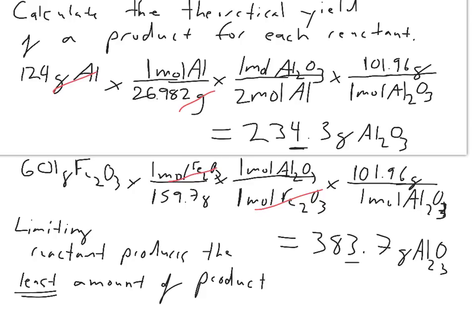The 124 grams of aluminum would yield 234 grams of aluminum oxide if you had excess of the other reagent, Fe2O3. And then 601 grams of Fe2O3 would produce 383 grams of aluminum oxide if you had the other reactant in excess. The aluminum produced the least amount. This would be the yield, the theoretical yield for the reaction.